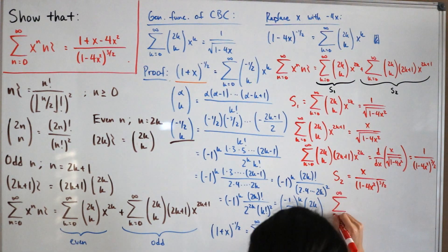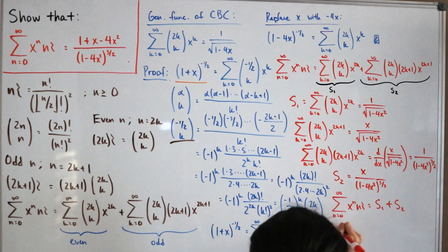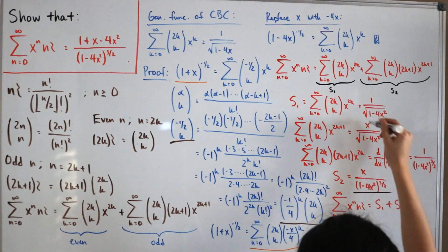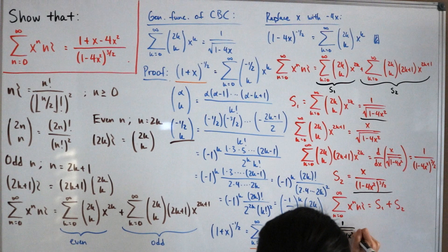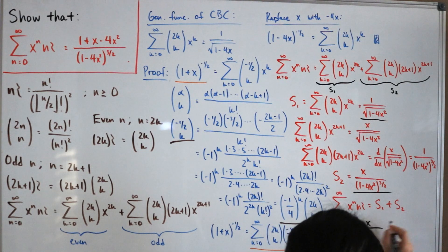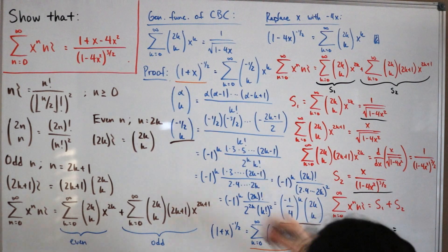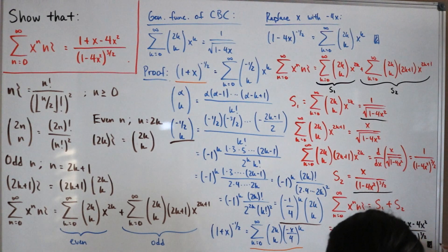Now substituting back: S1 + S2 = 1/√(1-4x²) + x/(1-4x²)^(3/2). Getting a common denominator and simplifying gives (1 + x - 4x²) / (1 - 4x²)^(3/2), which is exactly the right-hand side. We have verified that the left-hand side equals the right-hand side.